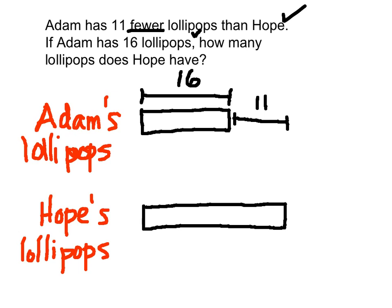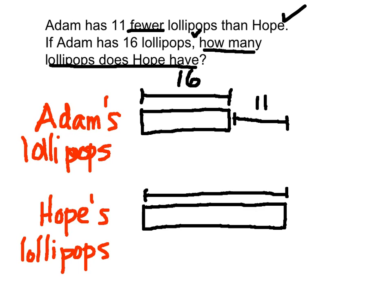How many lollipops does Hope have? That is the question. These are Hope's lollipops right here — from here to here. So we're going to draw a length marker and label that with a question mark, because that's what we're trying to find out — we don't know that yet. Now it's time to put our answer to the question in a complete sentence: Hope has blank lollipops.